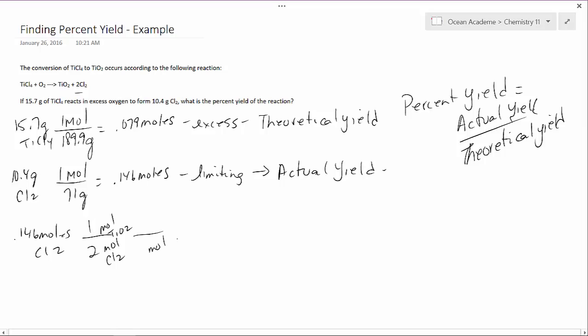So let's convert this to grams. To get rid of moles we put that on the bottom. Look to our periodic table for TiO2 and we see 79.9 grams. Now we multiply and divide and we get a value of 5.8518 grams.